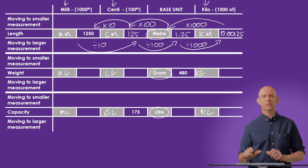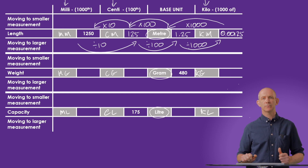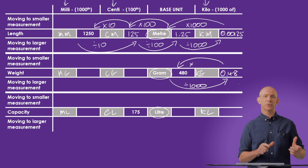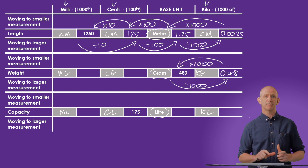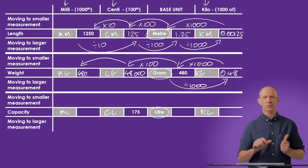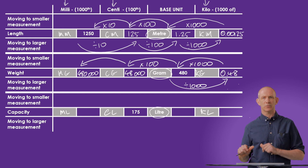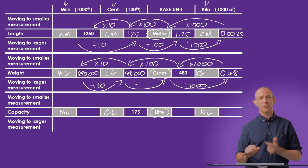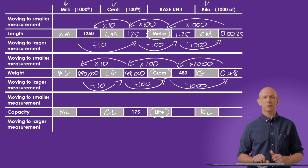Starting with 480 grams, we divide by 1000 to get 0.48 kilograms. Multiplying by 1000 takes us back to 480 grams, then multiplying by 100 gives 48,000 centigrams, and multiplying by 10 gives 480,000 milligrams. To complete the circle, we divide by 10 and then by 100 to return to 480 grams.